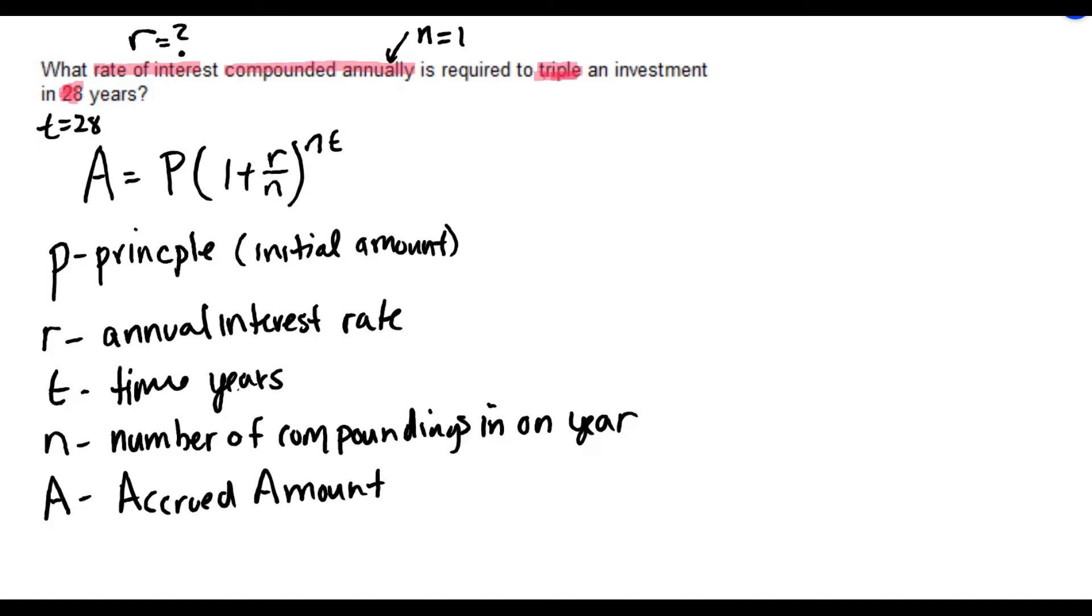Now for tripling the investment, that's telling you the relationship between your principal, your initial investment, and A, your accrued amount.